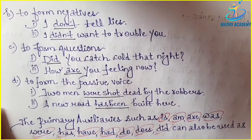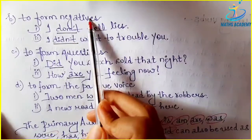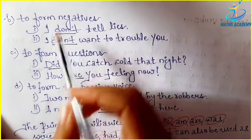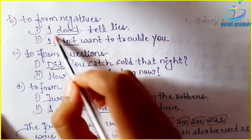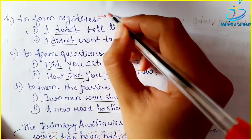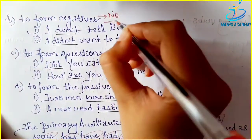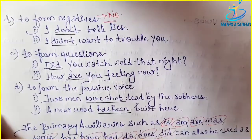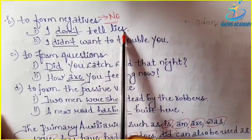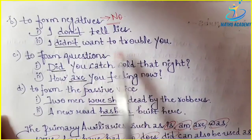Next, we use primary auxiliaries to form negatives — something that is saying no, having negation in it. For example: 'I don't tell lies.' 'I didn't want to trouble you.'